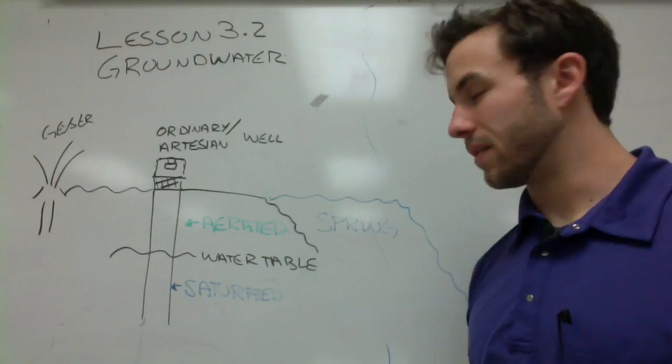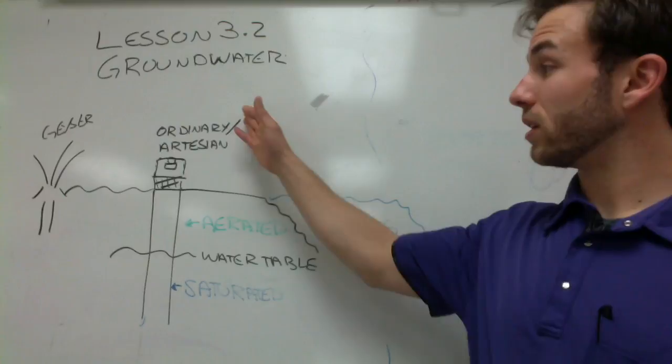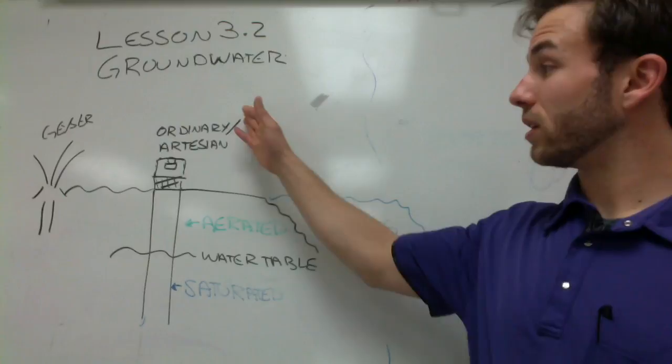To recap, there are three sources of groundwater we've looked at. First, a spring — a collection of water in which the water table is at the surface of the earth. Second, wells — sources we use for commercial uses, which can either be ordinary or artesian wells based on how they're pumped or pressurized. And finally, geysers — where a pressure buildup caused by blockage in the pipeline leads to the eruption of water from beneath the earth.